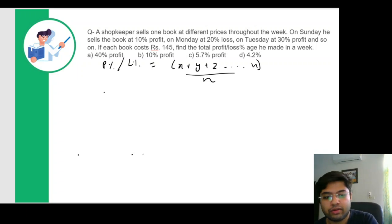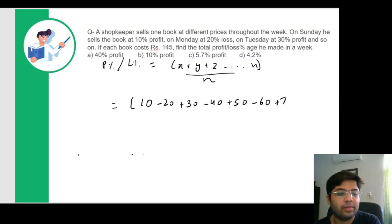So let's try for our question. First would be 10 percent, then there's a 20 percent loss. So this would be minus 20 plus 30 minus 40 plus 50 minus 60 plus 70. And we stop at 70 because there are seven days in a week. We were supposed to calculate for one week.